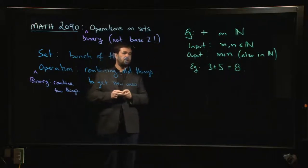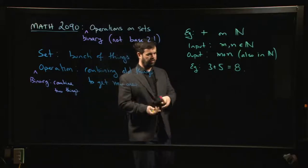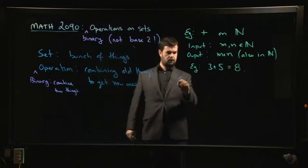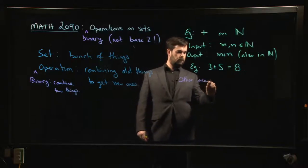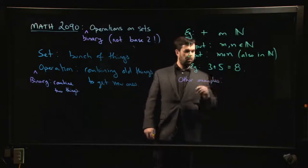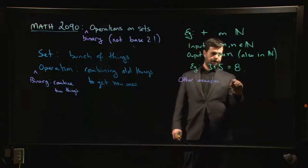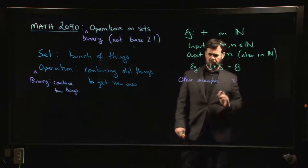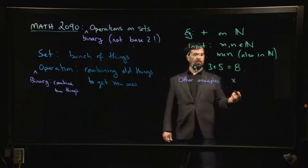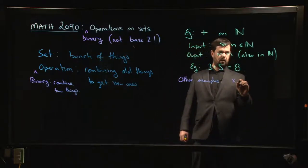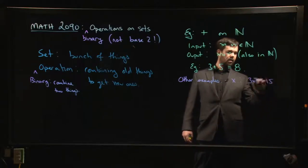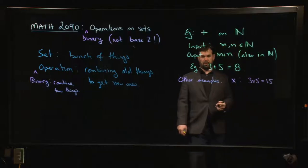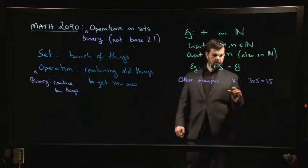Of course, addition is not the only binary operation on the natural numbers. We could also do multiplication. Sticking with the natural numbers, we could do something like three times five and get fifteen — again, a natural number.